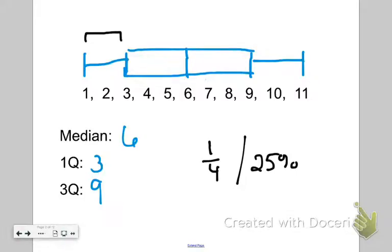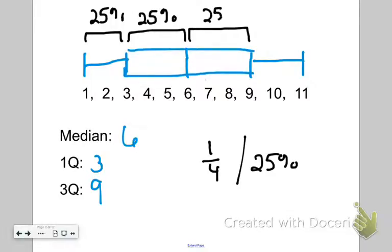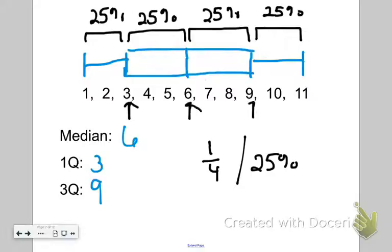That means from here to here, that's 25% of your numbers. From here to here, that's 25% of your numbers. From here to here, that's 25% of your numbers. Simply because the quartiles and the median have broken those numbers up into your four sections, your quarters. You could also write them as fractions if you wanted.